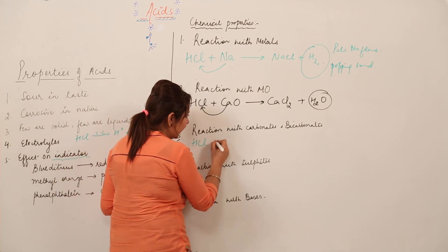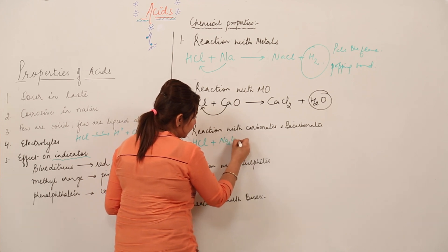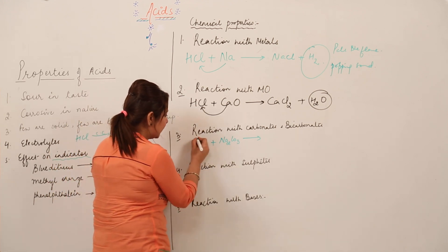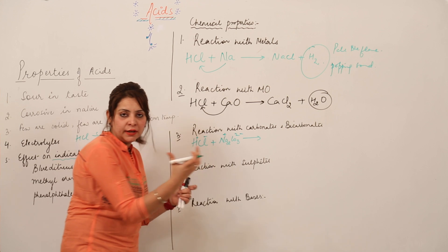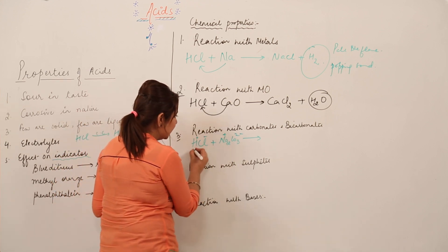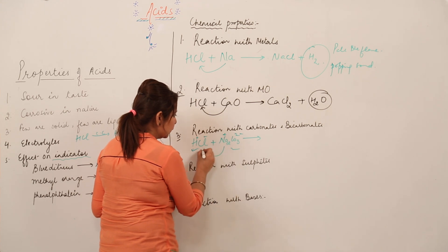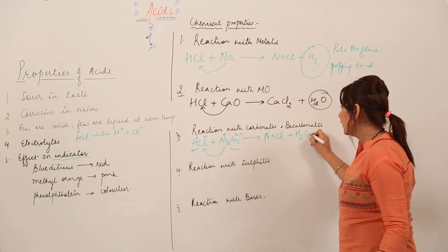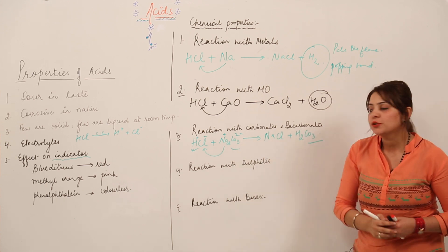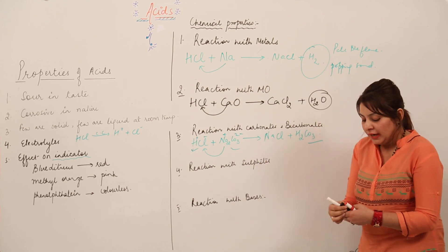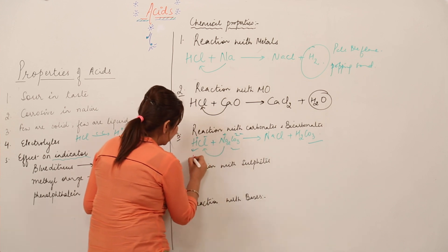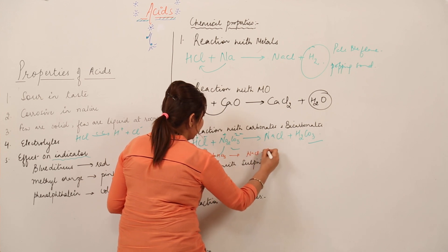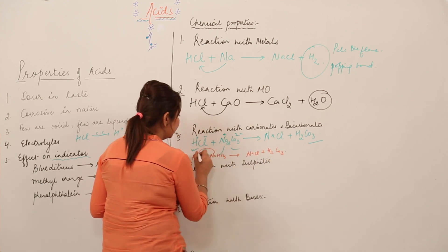Third is the reaction of acid with carbonates and bicarbonates. Suppose I have HCl and Na₂CO₃. By interchanging the valencies, we get NaCl along with carbonic acid (H₂CO₃). Similarly, with sodium bicarbonate, we again get NaCl and H₂CO₃. So the same products are formed in both cases.